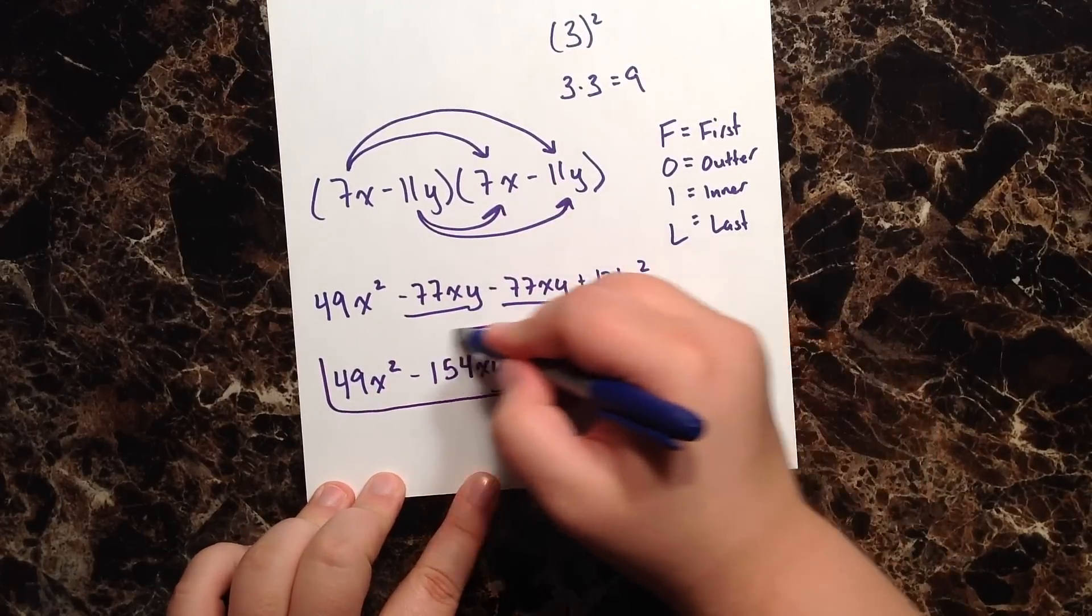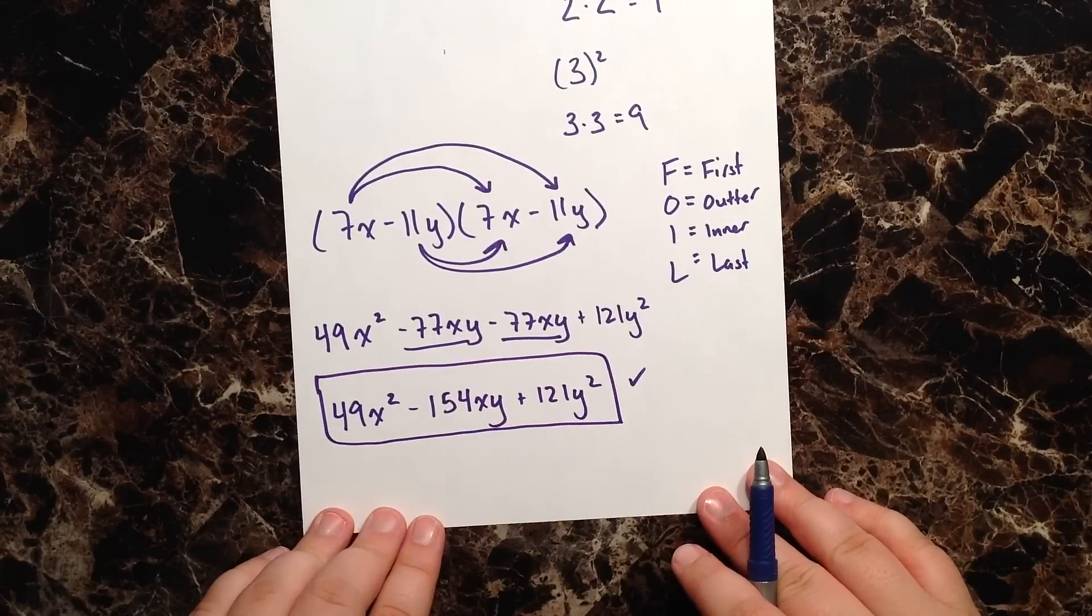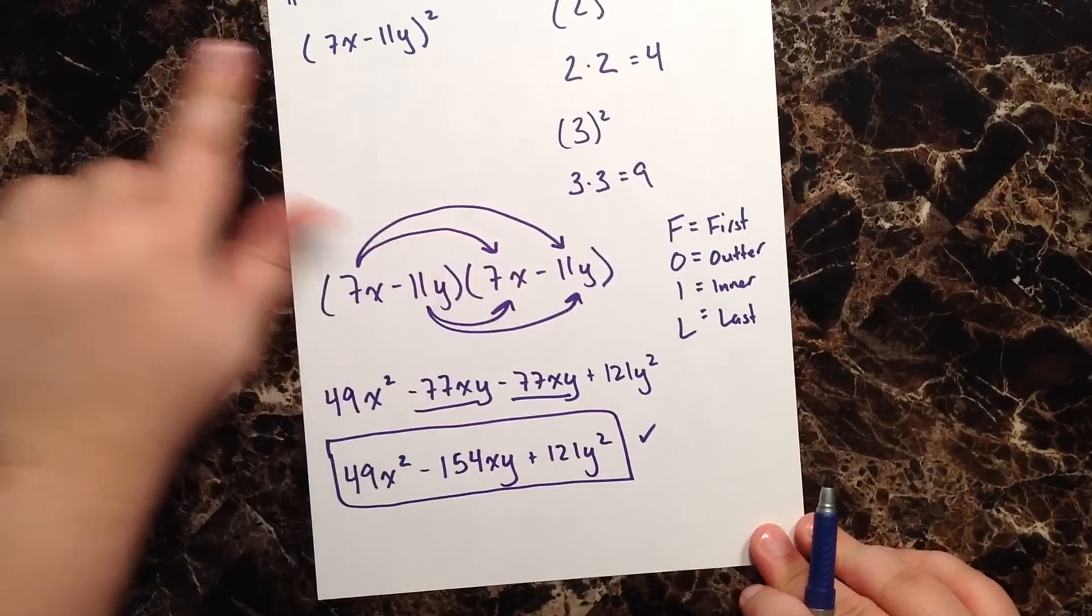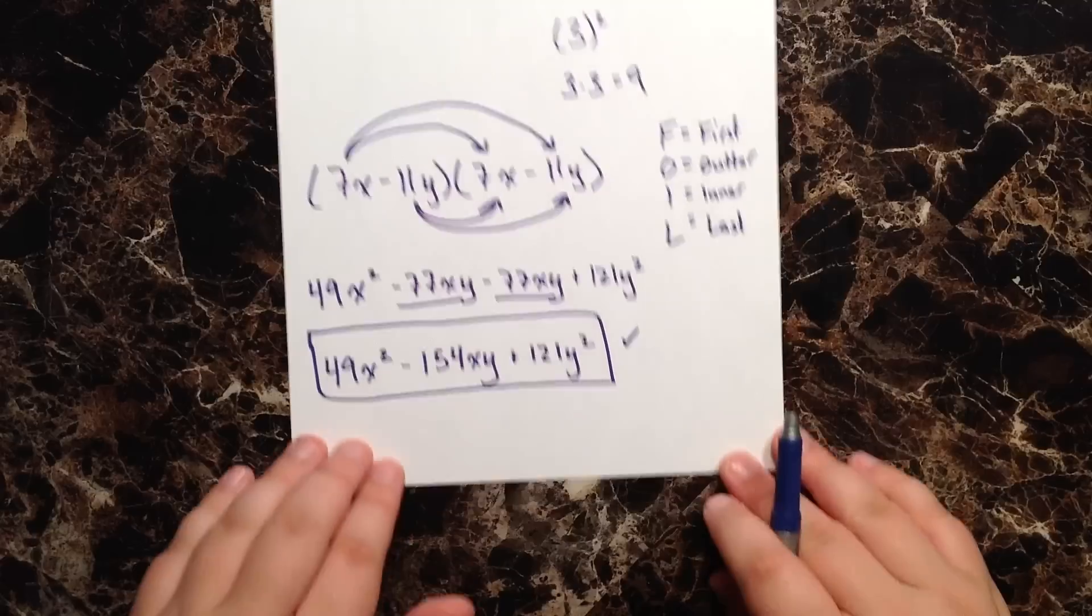And that is the result of my FOIL of the binomial (7x - 11y)²: 49x² - 154xy + 121y².